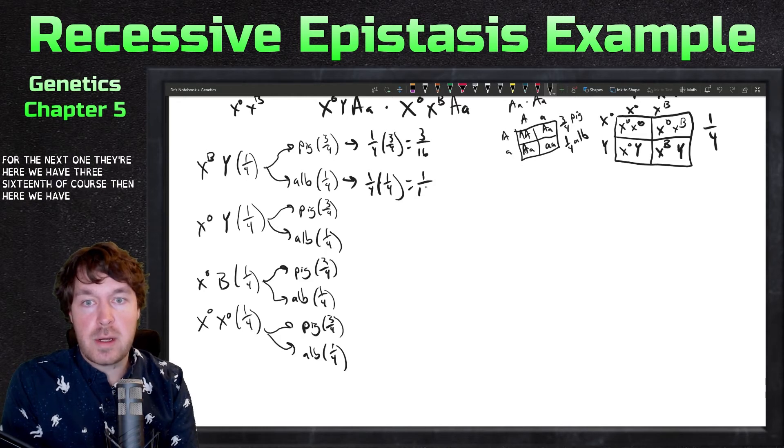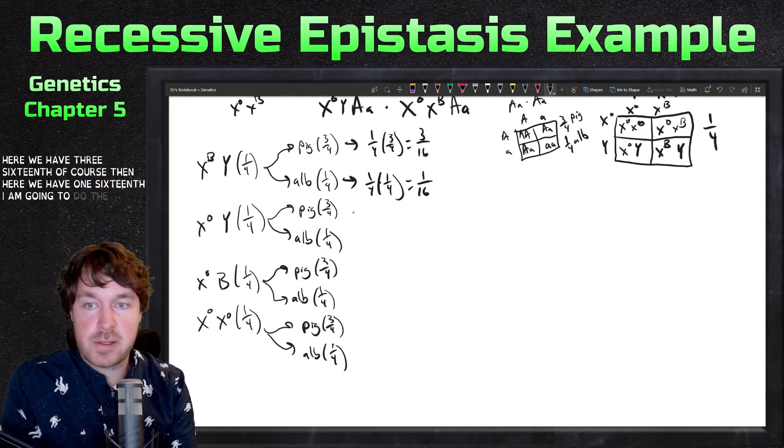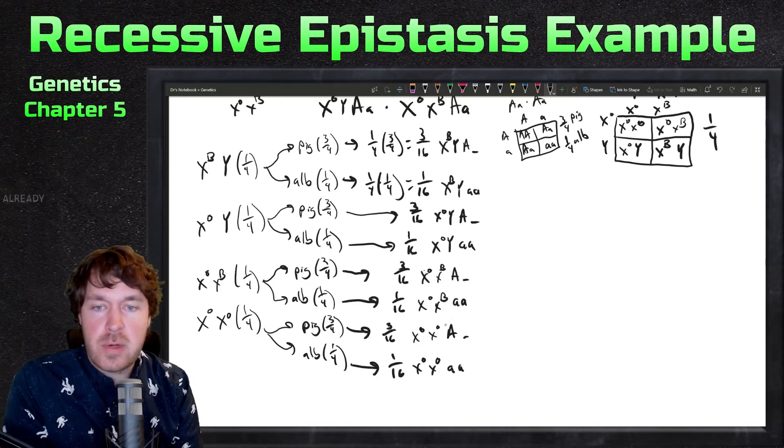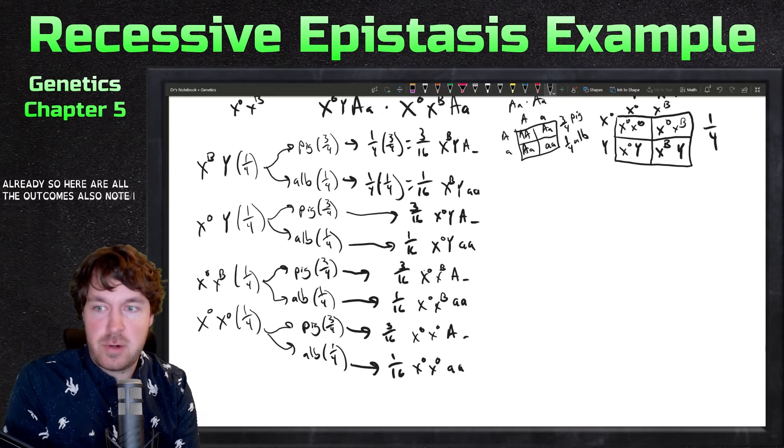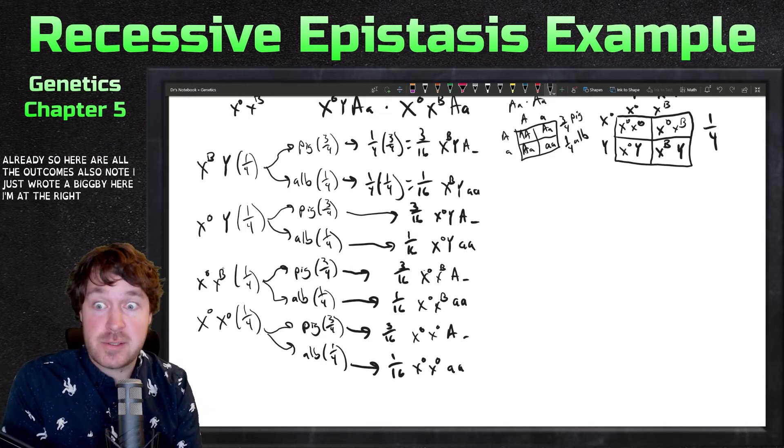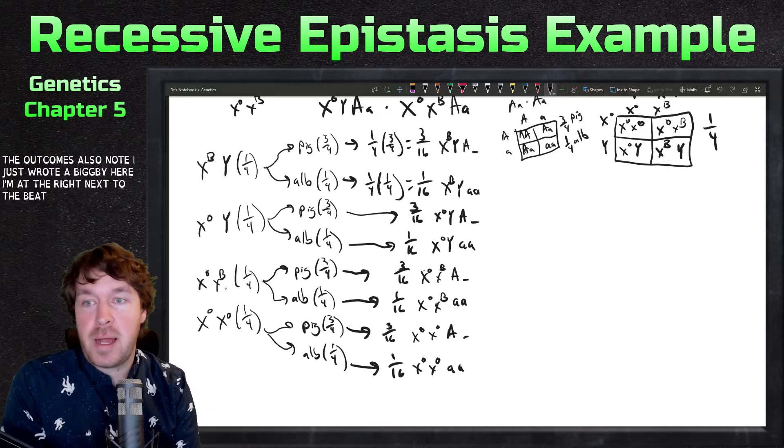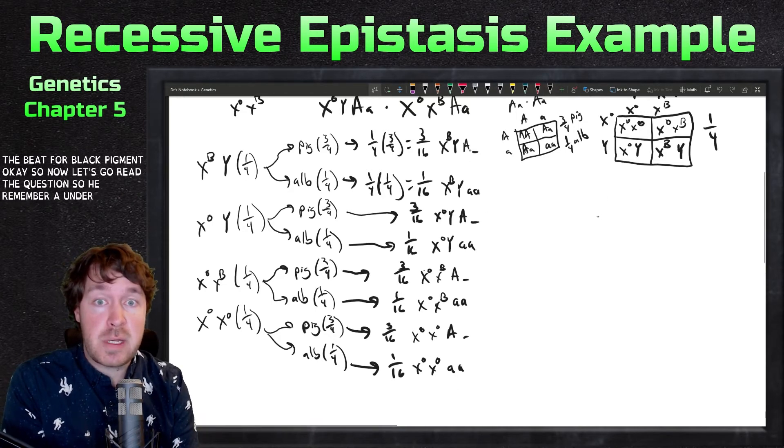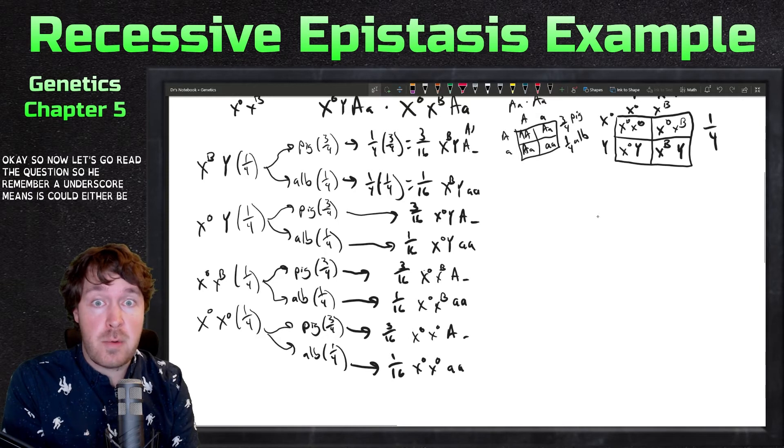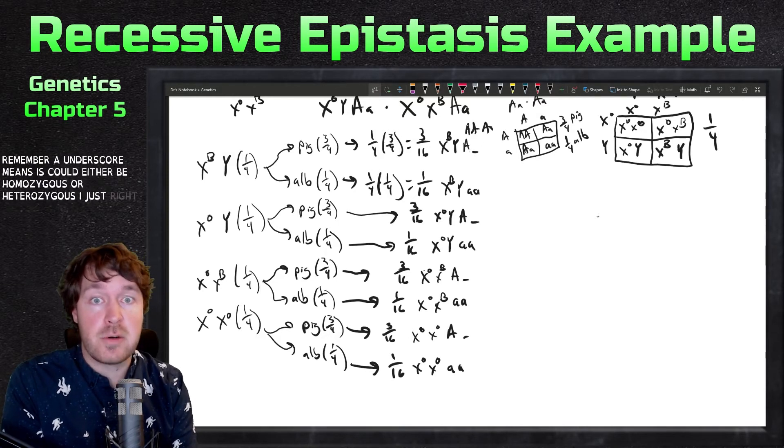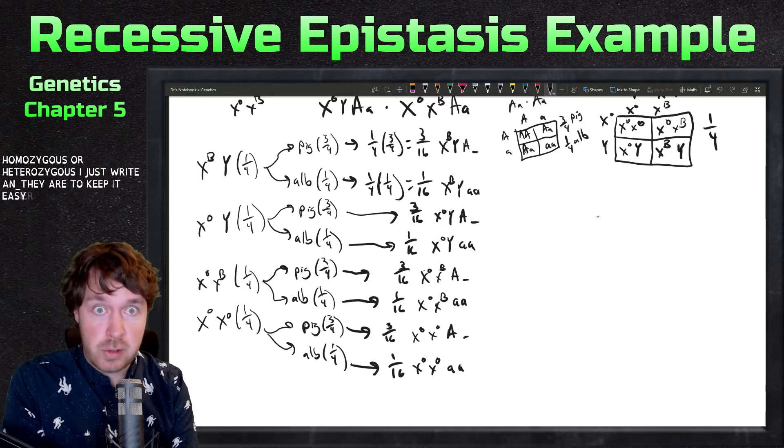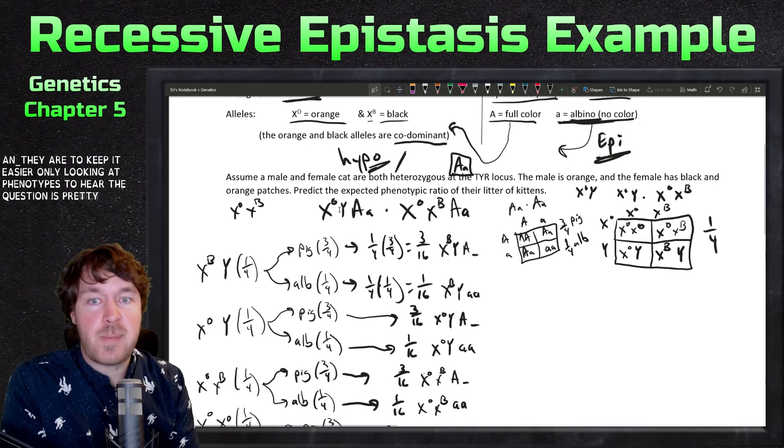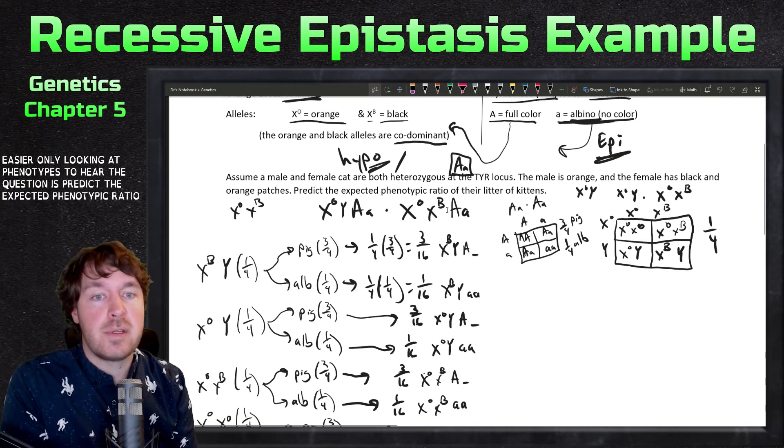Here are all the outcomes. Also note I just wrote a big B here - I meant to write X to the B for black pigment. Now let's go read the question. Remember an underscore means this could either be homozygous or heterozygous. I just write an underscore there to keep it easier. We're only looking at phenotypes. Here the question is predict the expected phenotypic ratio of their litter of kittens.